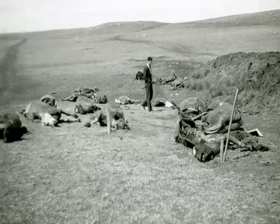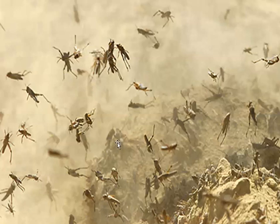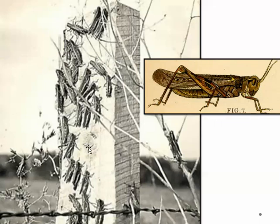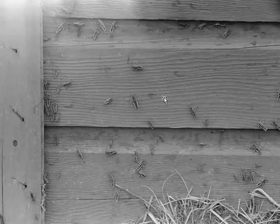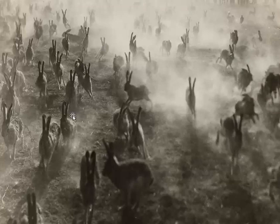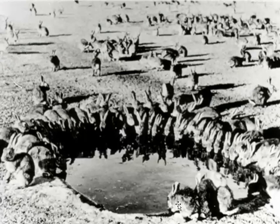Some people said it was almost biblical, like the Book of Revelation was coming — the end of the earth — because they saw locusts and grasshoppers as a plague, just a huge darkened cloud flying through the air. Here's a picture of some on a fence post, and here's a diagram showing them crawling all over the place. Rabbits were also running everywhere with nothing to eat, crowding around water holes trying to get water after the dust storms.